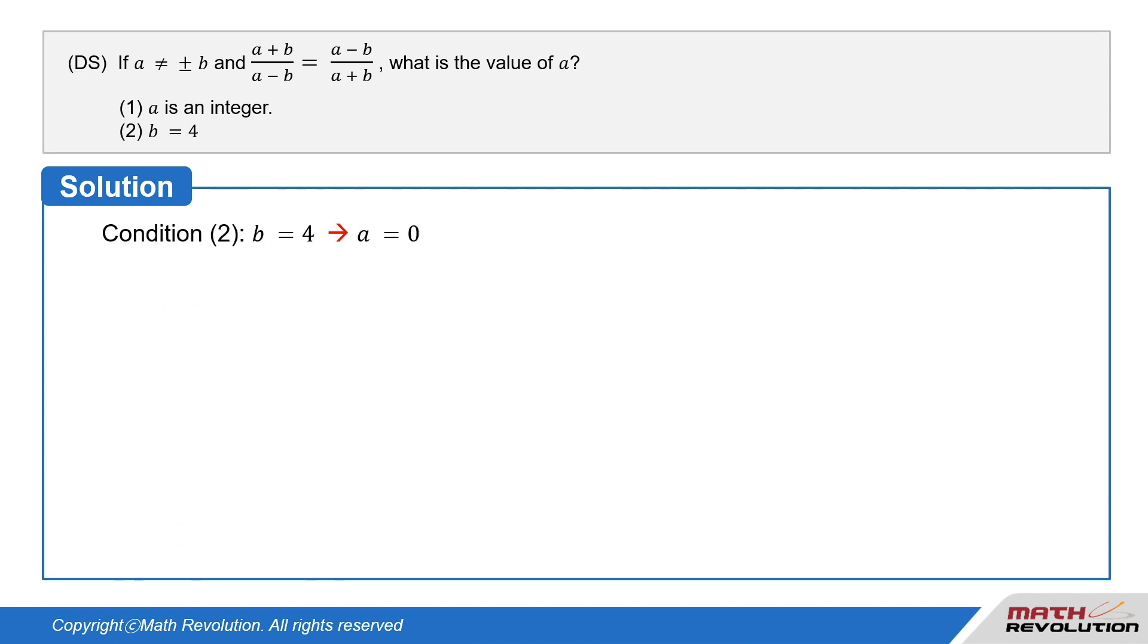So, let's look at condition 2, which gives us the value of b equals 4, so a equals 0. The answer is unique, so the condition is sufficient by the common mistake type 2, which means that the number of answers must be 1.